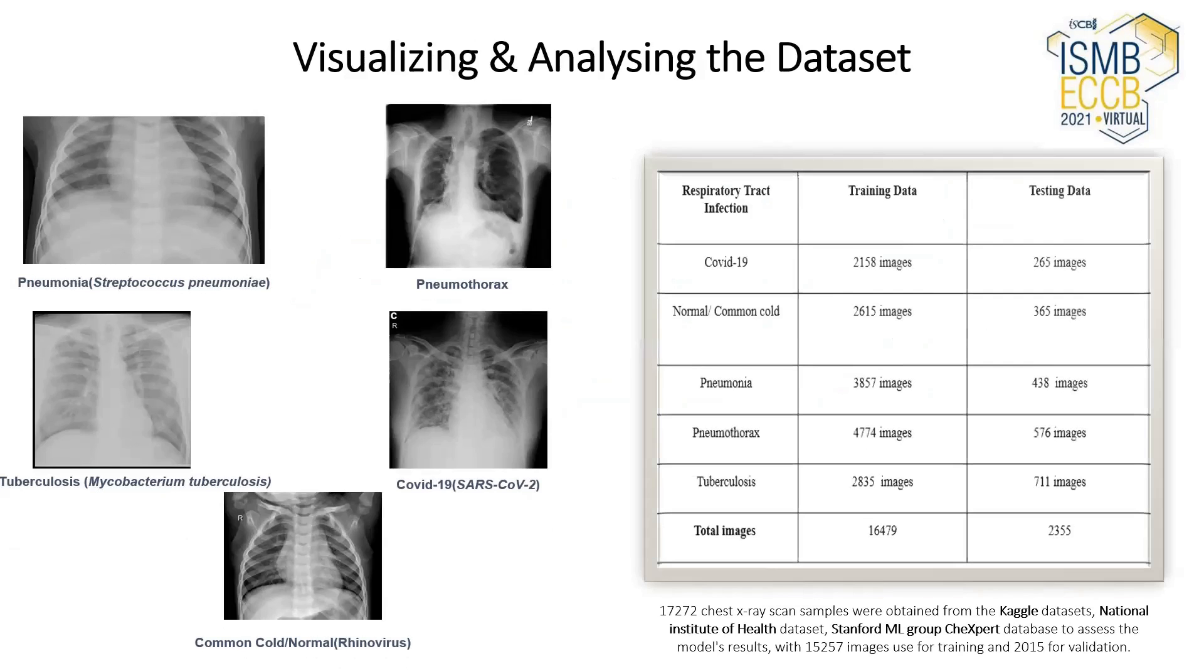The dataset is compiled from repositories such as NIH and Stanford ML Group CheXpert database. We use 17,272 images, of which 15,257 images are used as the training dataset and 2,015 for validation purposes.